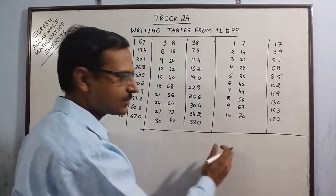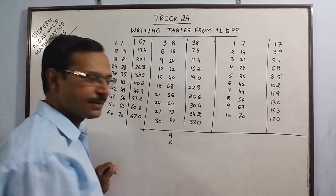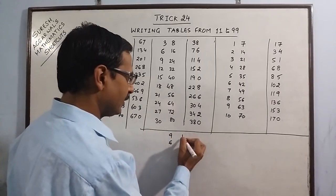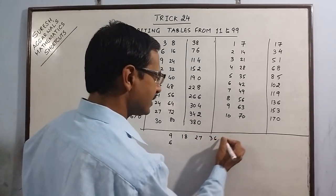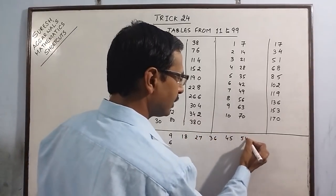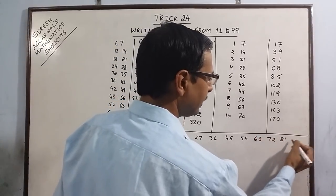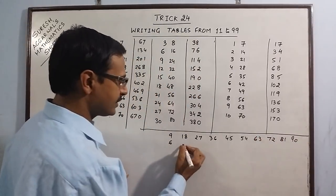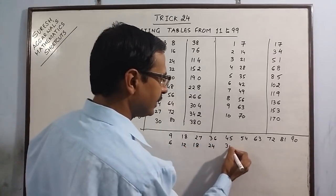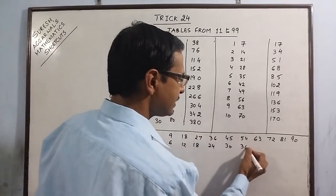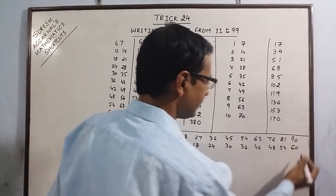I have less space here so I am writing 9 and 6. The table of 9: 9, 18, 27, 36, 45, 54, 63, 72, 81, 90. And the table of 6: 6, 12, 18, 24, 30, 36, 42, 48, 54, 60.